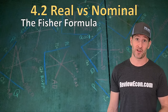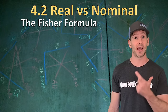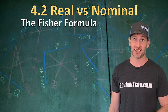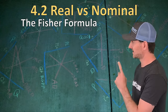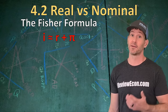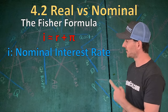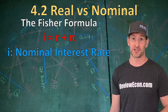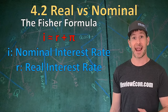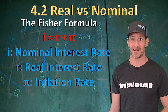Next, we're going to talk about the Fisher formula. The Fisher formula tells us the relationship between nominal and real rates of change. The difference between the two is the inflation rate. The formula is: little i approximately equals little r plus pi. The little i is the nominal rate of interest, the little r is the real interest rate, and pi is not 3.14 — it's the rate of inflation.